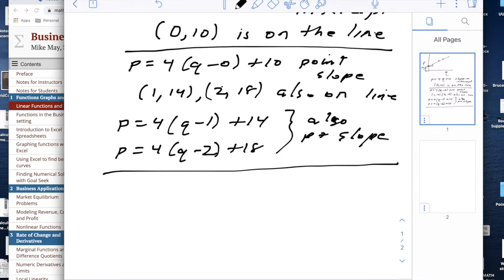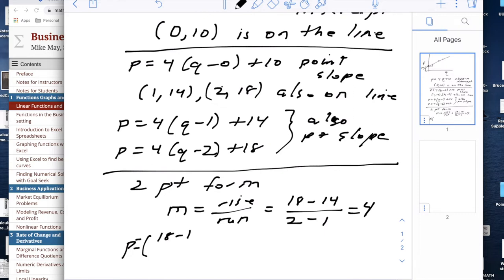If I want to look at the two point form, I'm going to notice that the slope is the rise over the run. In this case that would be 18 minus 14 over 2 minus 1 which we said was 4. The two point formula simply uses that expression for slope so I would get P equals 18 minus 14 over 2 minus 1 times (Q minus 1) plus 14 and that gives me the two point form.